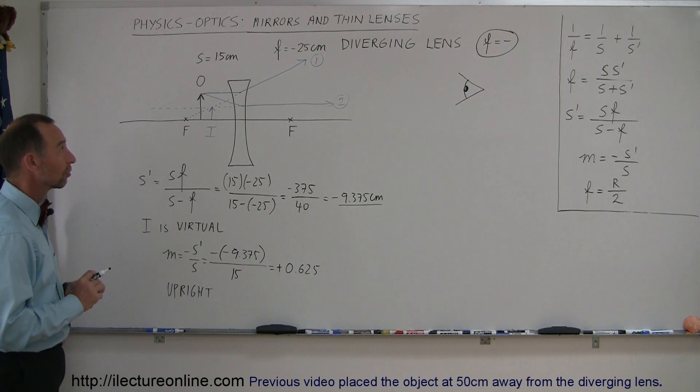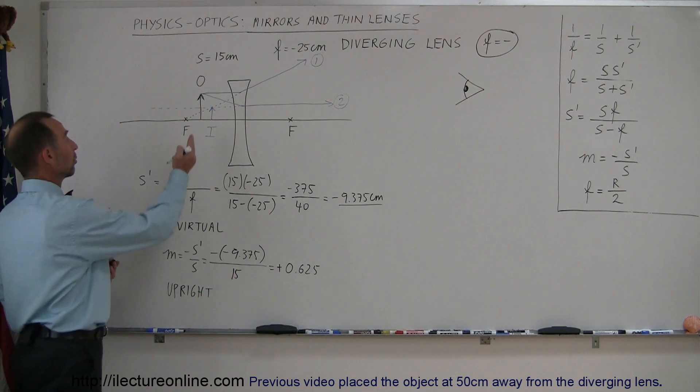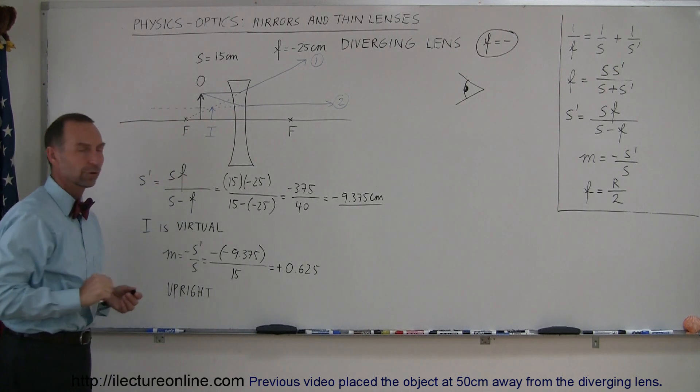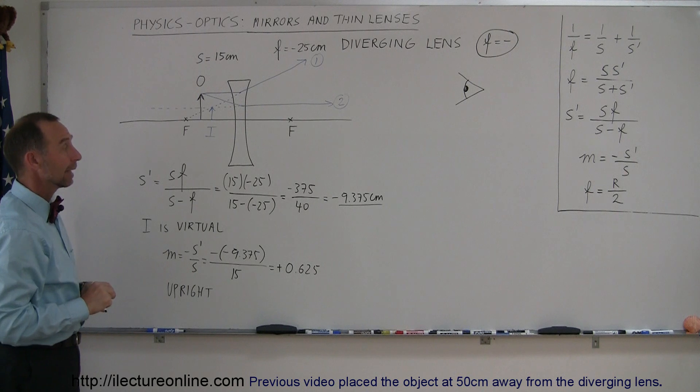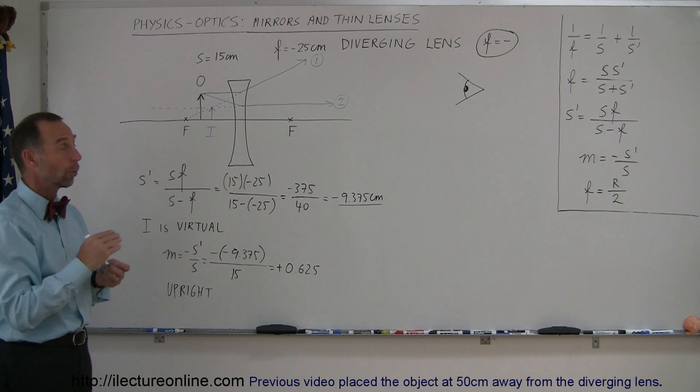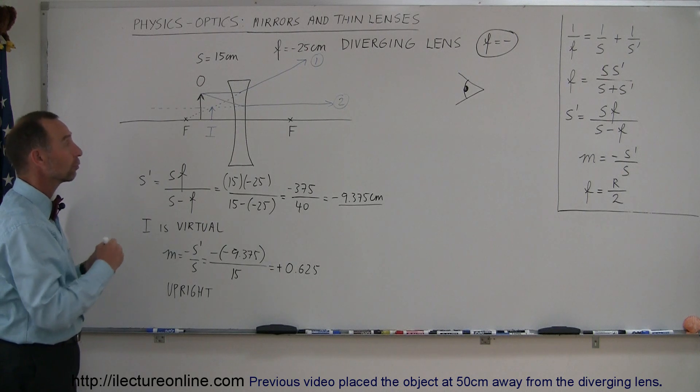And that's how you work with diverging lenses. Notice not a lot of difference between placing the object here versus placing the object further away. Alright. The next video, we're going to now do combinations of lenses. Instead of just using one lens, we're going to use a combination of two lenses to see where the image is in that case.